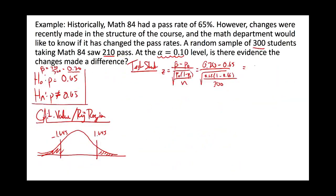You should be able to calculate that out and get a test statistic of 1.82. You have to be careful about parentheses on your calculator — keep track of them separately. We round to two decimal places because it's a z-score.